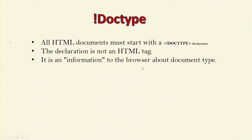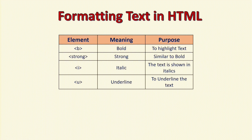It is information to the browser about the document type. In HTML we have some formatting tags: B for bold, to highlight the text; strong, which is similar to bold; I, which is used for italic — the text is shown in italics; and U for underline, which underlines the text. So these are some formatting tags in HTML.